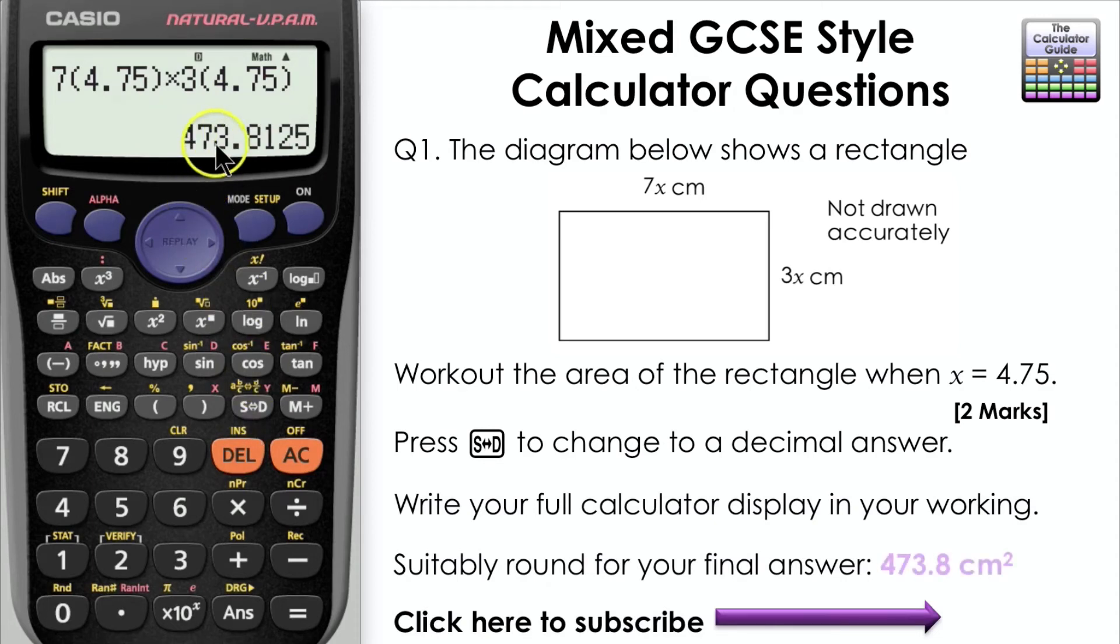I'd always suggest writing your full calculator display in your working. For your final answer we're going to suitably round that to one decimal place. So 473.8 centimeters squared.